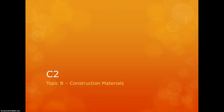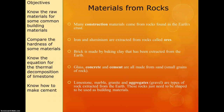Next up in Chemistry 2 is entitled Construction Materials. This topic is about knowing what the raw materials are that we use for building materials, being able to compare the hardness of them, knowing how to make cement, and there is a chemical equation that we need to learn for this one as well.